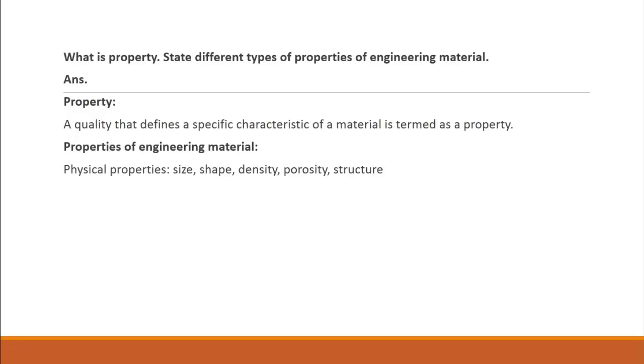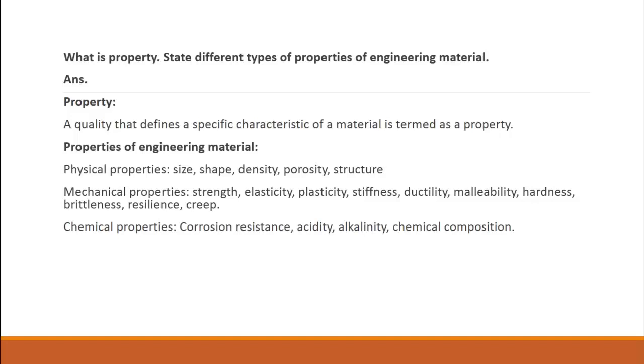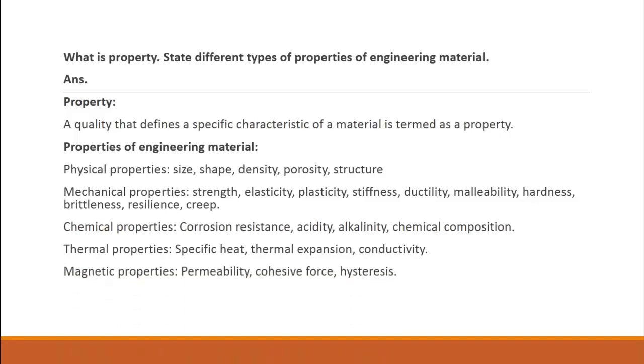Mechanical properties include strength, elasticity, plasticity, stiffness, ductility, malleability, hardness, brittleness, resonance, and creep. Chemical properties include corrosion resistance, acidity, alkalinity, and chemical composition. Thermal properties include specific heat, thermal expansion, and conductivity. Magnetic properties include permeability, coercive force, and hysteresis. Electrical properties include conductivity, dielectric permittivity, and dielectric strength.